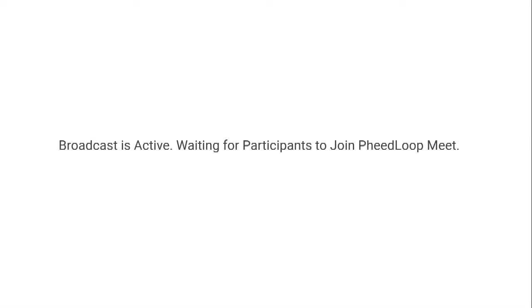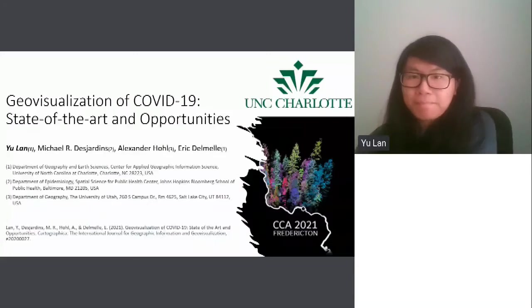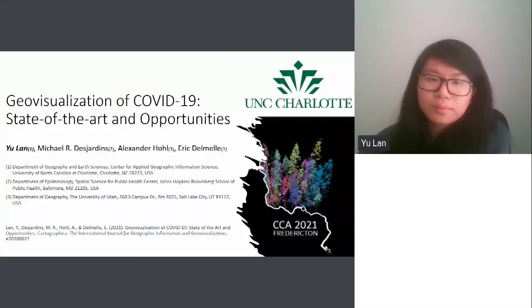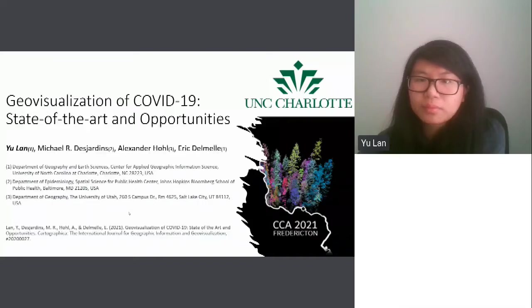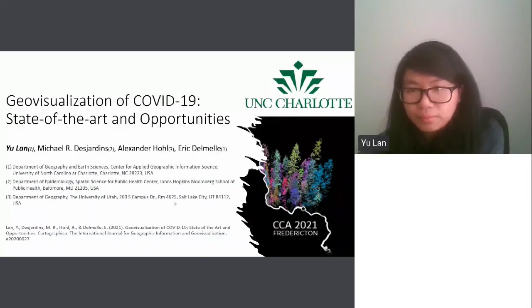We have our panel discussion and Ulan is our first presenter. Ulan is a doctoral student in Geography in the Department of Geography and Earth Sciences at the University of North Carolina at Charlotte. Her research interests include spatial epidemiology, geovisualization, and web GIS in health geography. She wrote one of the four articles, and each author is going to briefly cover the high points of their article in a 10-minute session.